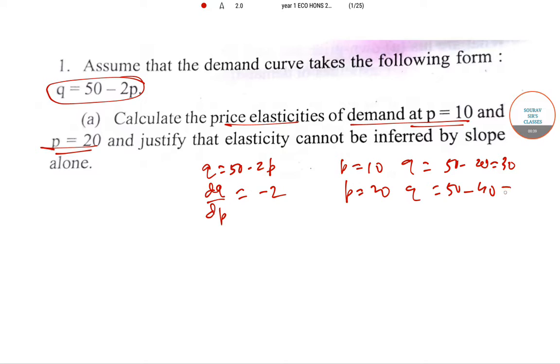Elasticity at P = 10 is dQ/dP times P/Q, which is -2 times 10/30, so this is -2/3. At P = 20 it is -2 times 20/10, which is simply -2.